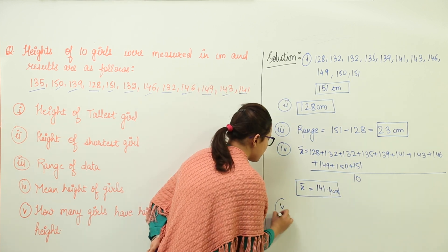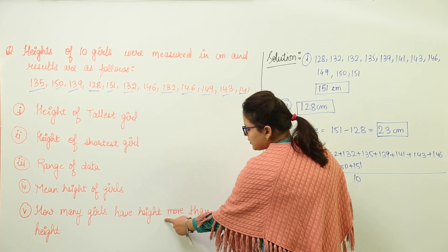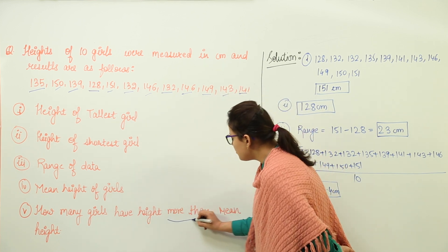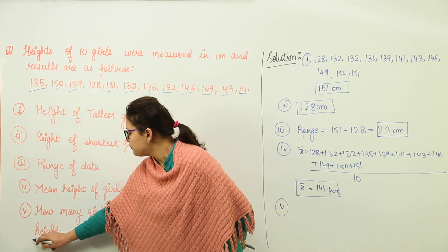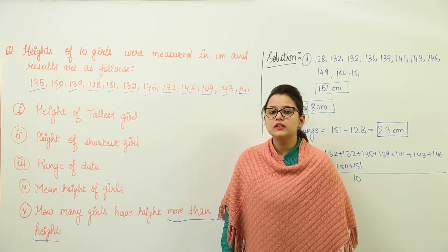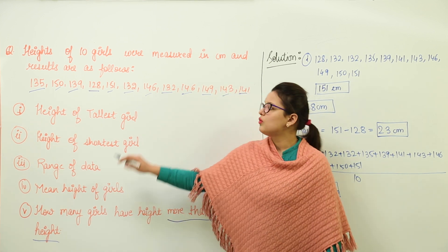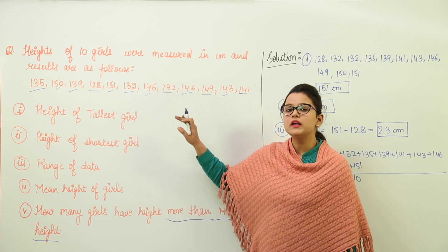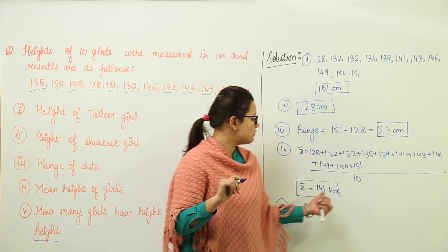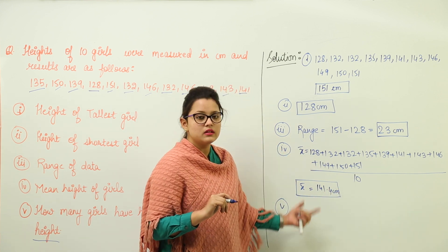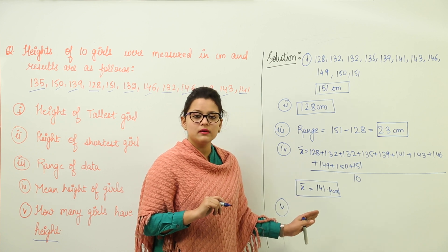Now answering the last part - you have to find how many girls have height more than mean height. Now because you have already calculated the mean height which is 141.4, we can see how many heights will be lying more than this. But for that what should be done? We have to arrange the data in increasing order, because that would help us in a better way.